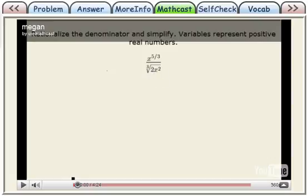So that's what I do in this example. What I first do is I try to rewrite this numerator as x to the 1 and 2 thirds. So I have x to the 1 and 2 thirds.